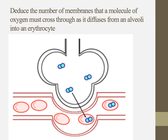Here's a classic question: deduce — which is fancy pants for 'figure it out' — the number of membranes a molecule of oxygen must cross as it diffuses from an alveolus into an erythrocyte, which is a red blood cell. For my students, you should be able to figure this out on your own — deduce the number of membranes it would cross and draw an accompanying diagram.